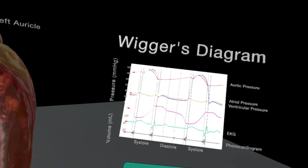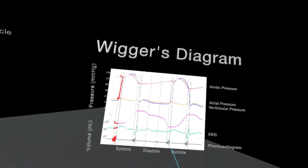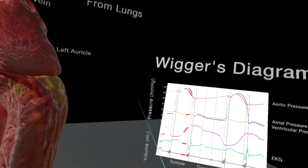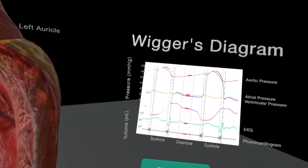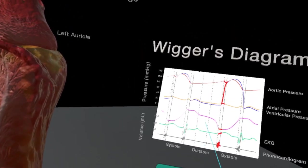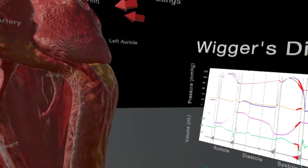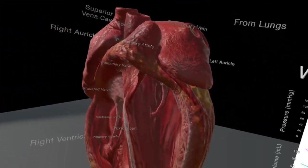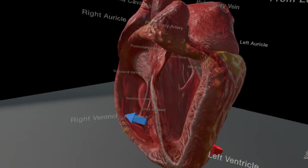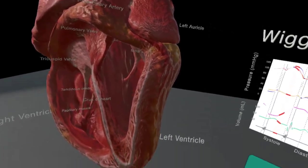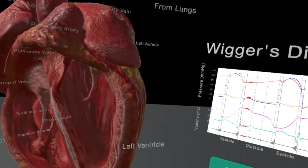This diagram is helpful to see the volume in milliliters and the pressure in the heart. Students often struggle to correlate this two-dimensional data with the three-dimensional information—the animation. Here, having them side by side helps bridge that gap.